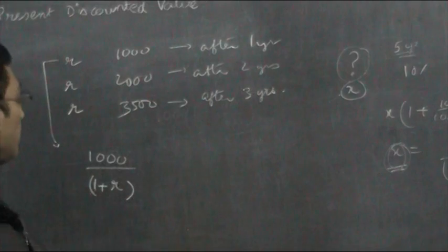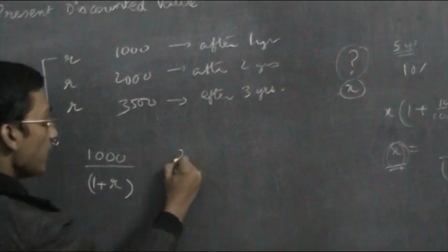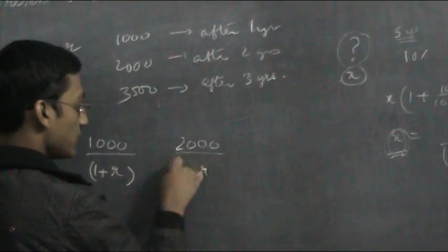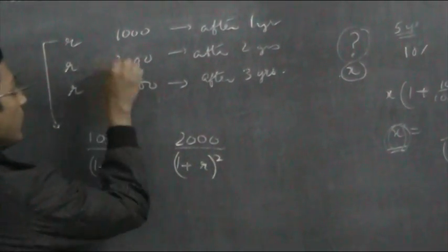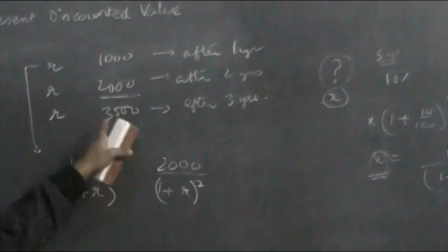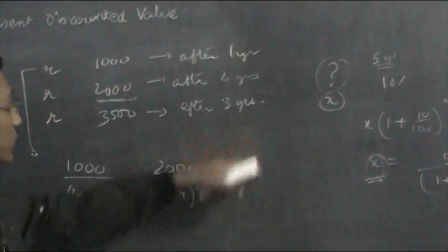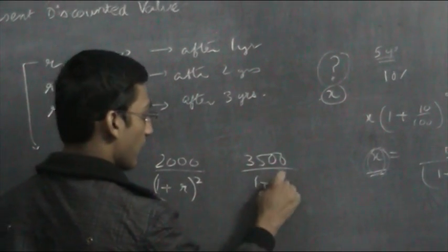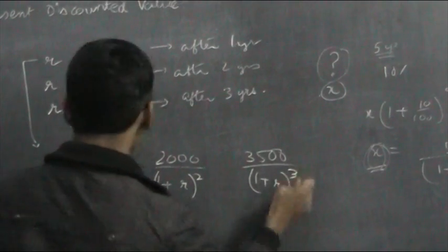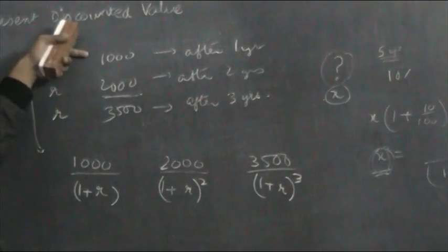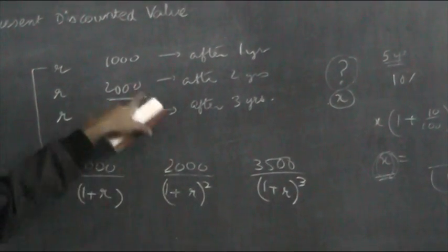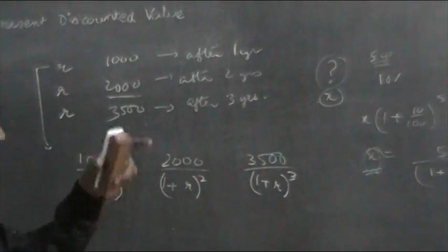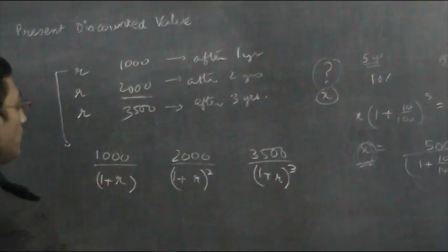For the second payment, I have to pay 2000 at interest rate R, so the present discounted value to afford this payment is 2000 / (1 + R)^2. For year 3, the present discounted value is 3500 / (1 + R)^3. So we have the present discounted value for the first payment, for the second payment, and for the third payment. How much should I deposit now to make all 3 payments?